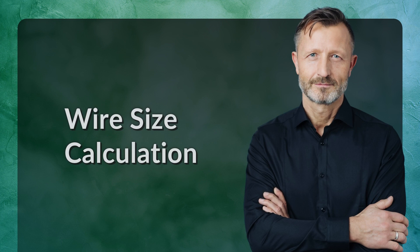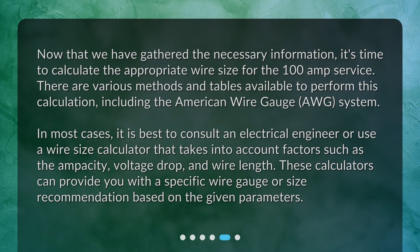Wire Size Calculation. Now that we have gathered the necessary information, it's time to calculate the appropriate wire size for the 100 amp service. There are various methods and tables available to perform this calculation, including the American Wire Gauge (AWG) system. In most cases, it is best to consult an electrical engineer or use a wire size calculator that takes into account factors such as the ampacity, voltage drop, and wire length. These calculators can provide you with a specific wire gauge or size recommendation based on the given parameters.